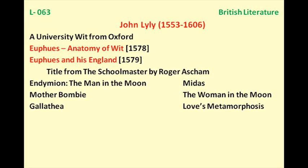Hello friends, this is lesson number 63 in the series of British literature in English. Today in this lesson we shall consider John Lily. In the last few videos we have been discussing the University Wits — so far we have discussed the University Wits from Cambridge: Christopher Marlowe, Robert Green, and Thomas Nash. Now we have the University Wits from Oxford.